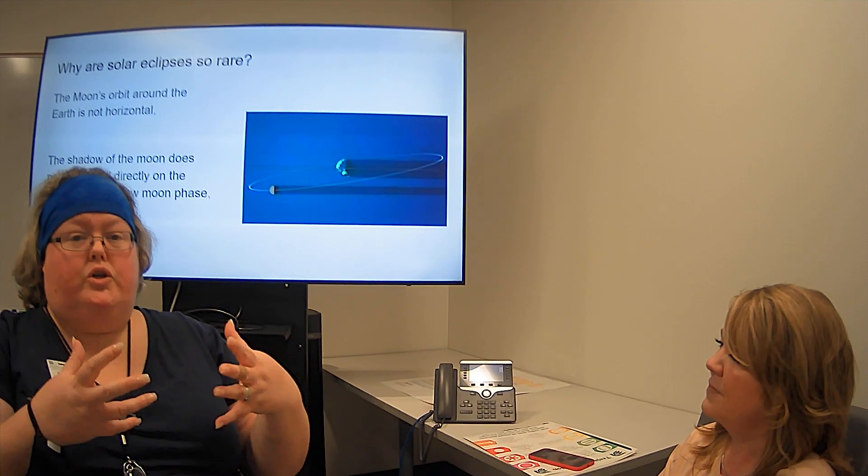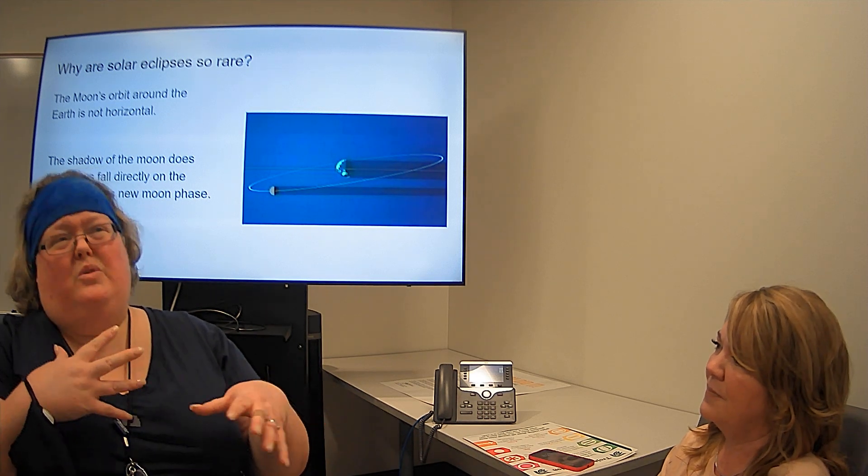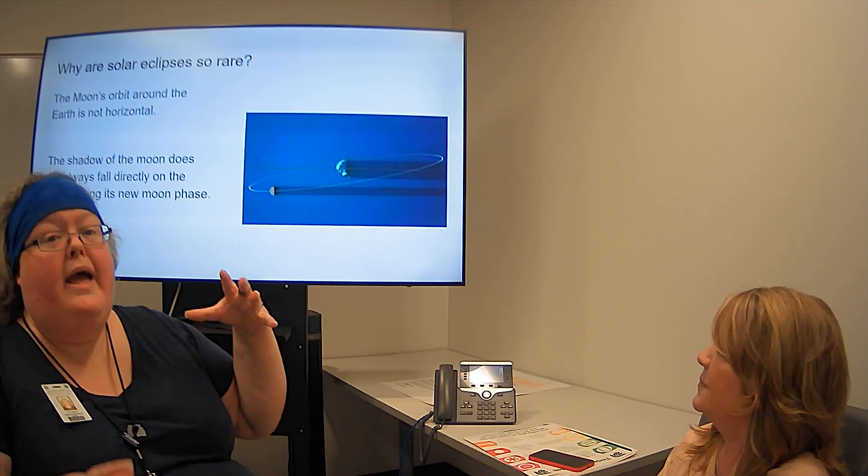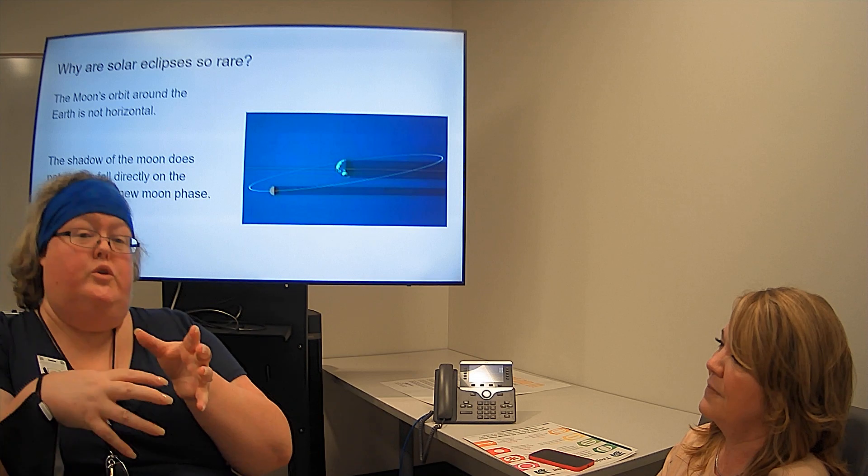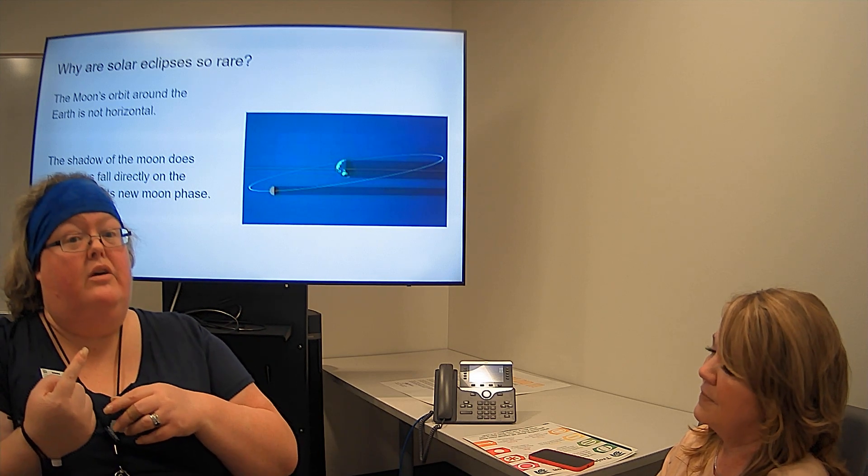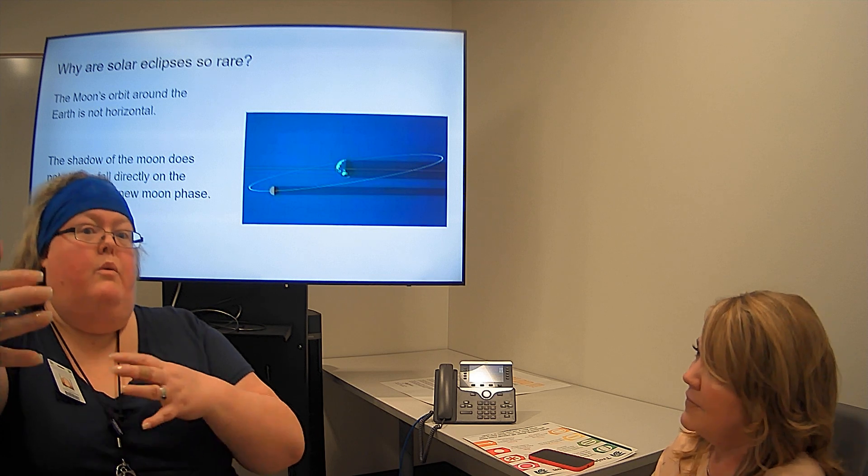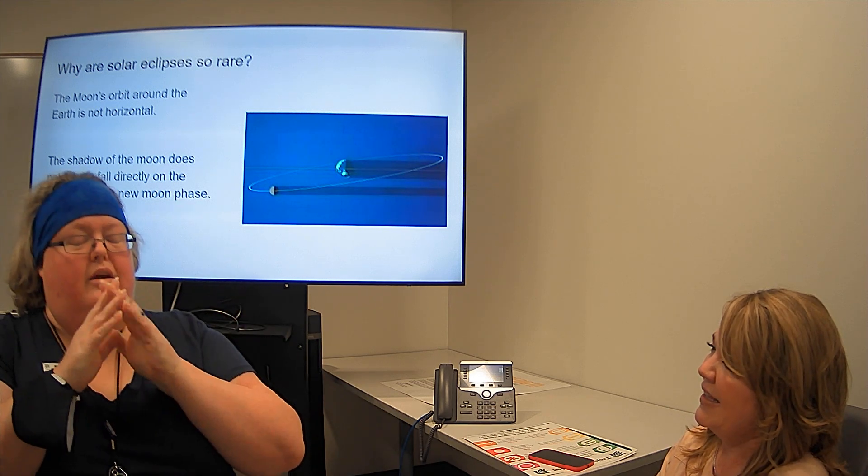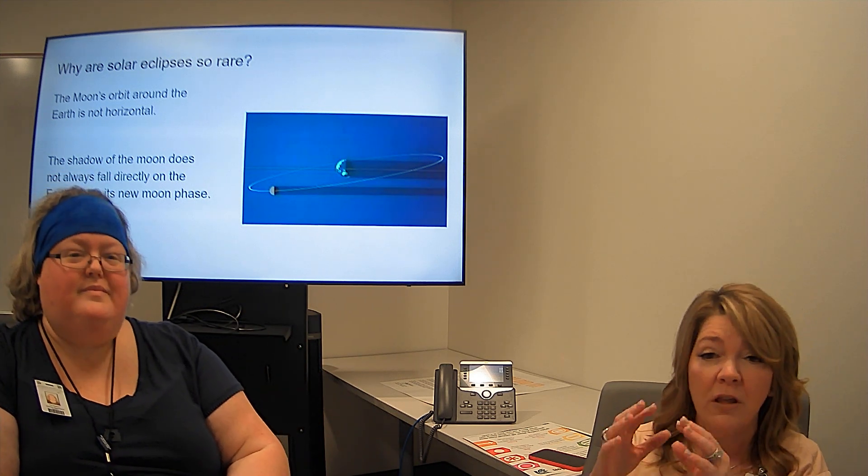A partial solar eclipse happens on earth every, usually on average, year and a half or so. But we're going to get it where it's perfectly lined up and because the moon's orbit is not perfectly circular. So sometimes if it's further away, it doesn't fully block out the sun. We are going to get it where it's at the closest approach so that it literally blocks out everything but the Corona. And it's so cool. Oh, I love it.